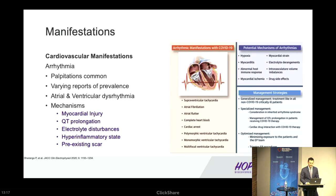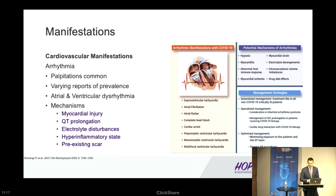Last but not least, arrhythmia. Palpitations are a fairly common complaint in admitted patients, though the true prevalence is difficult to parse out given variable definitions of what constitutes arrhythmia. Both atrial and ventricular dysrhythmias have been reported in COVID-19, with one single-center study reporting malignant arrhythmias — defined as sustained VT or VF — in 6% of critically ill patients. Proposed mechanisms include myocardial injury both ischemic and non-ischemic, QT prolongation in the setting of general illness or proposed COVID therapies, and electrolyte disturbances in hyperinflammatory states — all potentially occurring in the background of pre-existing scar.